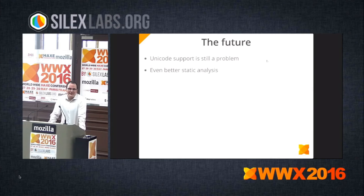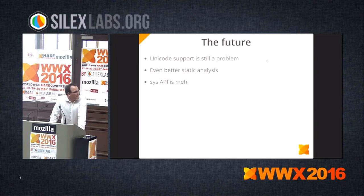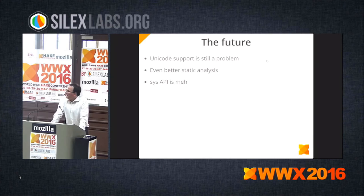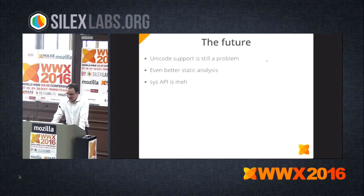Of course we want to make static analysis even better — there are so many interesting optimizations you can do once you have the information. The process API is also a bit of a nuisance — nobody really knows how it works and in which order you have to call functions, and you have to make sure pipes don't run full on Windows. Andy wants to look into finding a way to have a more synchronous API, which would help with Node.js. There's a lot to do in that area.